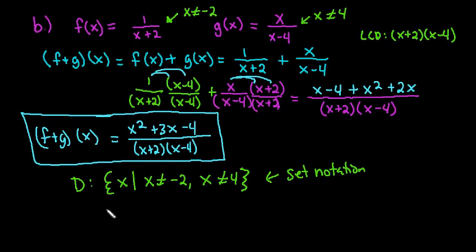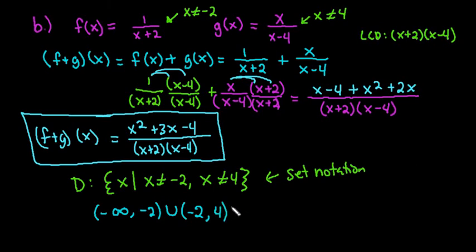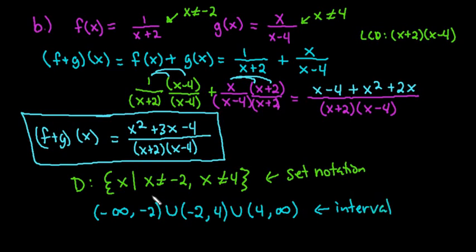In interval notation, the domain is everything from negative infinity up to negative 2, not including it, or from negative 2 up to positive 4, not including it, or from 4 all the way to positive infinity. The domain represents the values you can plug in and get a legitimate output — plugging in -2 or 4 gives 0 in the denominator, which is undefined, so those values are excluded.